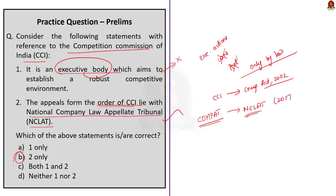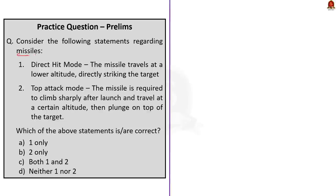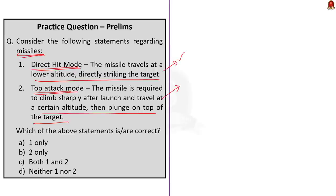Question two: Consider the following statements regarding missiles. Statement one: Direct hit mode is when the missile travels at a lower altitude directly striking the target. Statement two: Top attack mode is when the missile is required to climb sharply after launch and travel at a certain altitude, then plunge onto the top of the target. Which of the above statements is or are correct? Both statements are correct. The answer to this question is option C, both one and two.